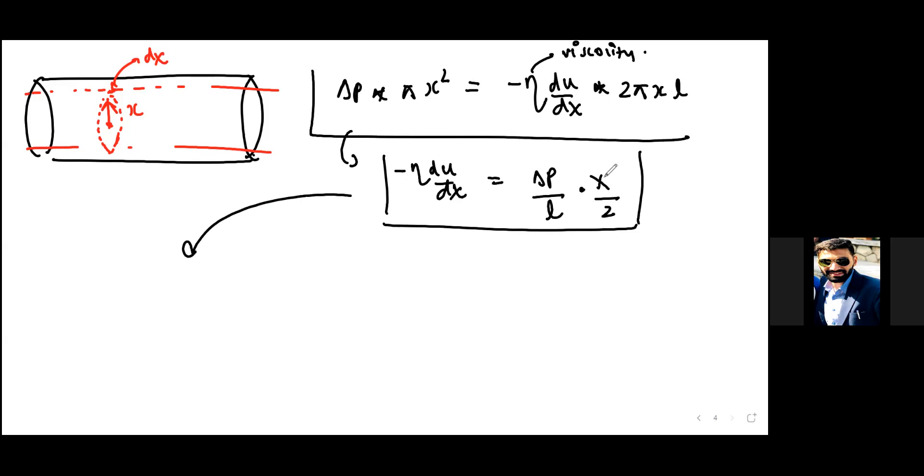Let me use a different color. We take x terms on the right-hand side and the constants on the right-hand side, and the derivative du on the left-hand side. So du equals minus delta p upon 2ηL, x dx. And you integrate both sides.